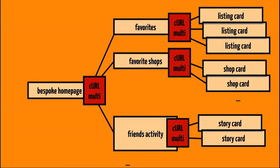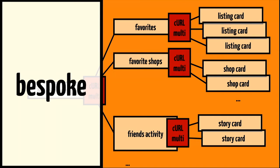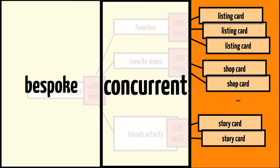Starting with an HTTP request from the browser to etsy.com, we look at the API layer. A bespoke API request is made to get a personalized version of the homepage data from our API server. This is the meta endpoint — a bespoke endpoint that aggregates data from other endpoints to create a response tailored to a specific view, distinct by service and perspective. This request may consist of multiple concurrent requests, such as fetching favorites, which consist of a large number of listing cards that can be fetched in parallel — that's the concurrent endpoint type.